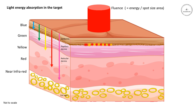When light gets into the dermis, it encounters a highly scattering medium. This means that the photons are bounced about all over the place and can cause the beam diameter to spread out significantly. Some of the scattered light will actually be turned through 180 degrees and will leave the skin completely. Calculations show that this may account for up to 50% loss purely due to backscattering.